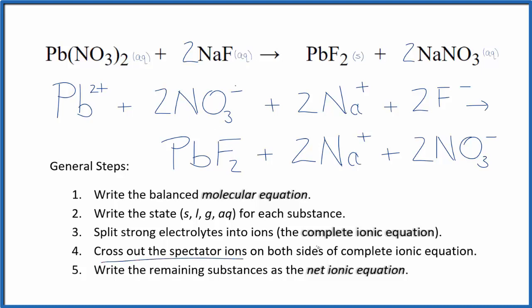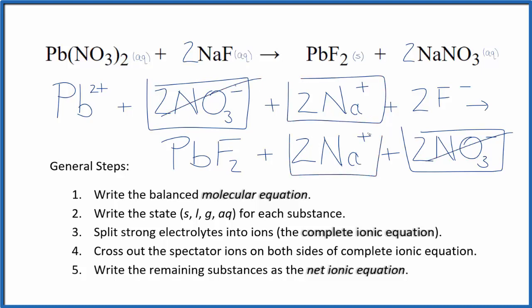Now we can cross out the spectator ions. They're on both sides of the complete ionic equation. So we have our products here and our reactants. In the reactants, we have these two nitrate ions. Again, in the products, we have the two nitrate ions. These are spectator ions. We're going to cross those out. We have two sodium ions in the reactants. And again, in the products, spectator ions, cross them out.